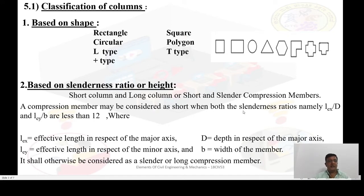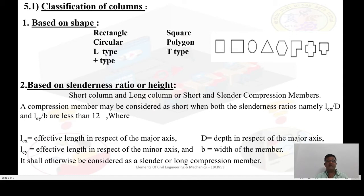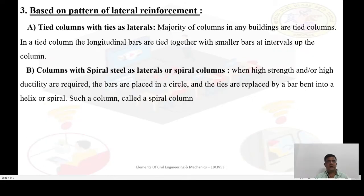Where lex is the effective length in respect of the major axis, d is the depth in respect of the major axis, ley is the effective length in respect of the minor axis, and b is the width of the member.